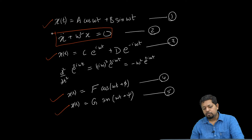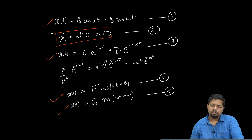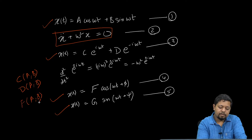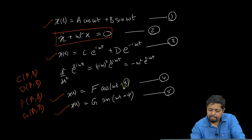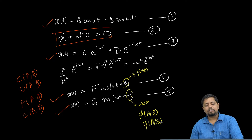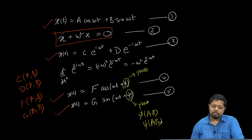These are just different ways of writing the same solution. As a homework exercise, I suggest you work out the relationship between the coefficients a, b, c, d, f, g, and the phases φ and psi. You need to find c and d in terms of a and b, similarly f and g in terms of a and b, and the phases phi and psi — which are also functions of a and b.